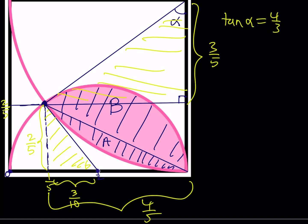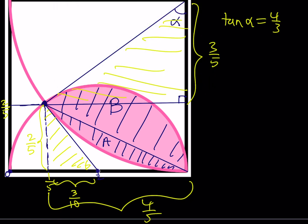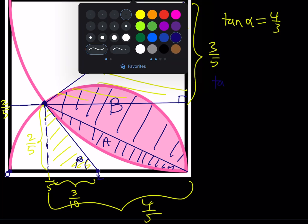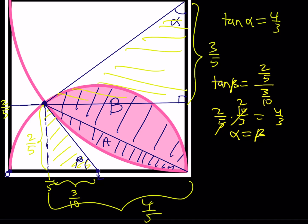For the angle at the semicircle center, I'll call it beta. Tangent beta = (2/5) ÷ (3/10) = (2/5) × (10/3) = 4/3 as well, which means alpha equals beta. So I can call both angles alpha. Now, how do we use this information? We're going to find the area of A first, then the area of B.